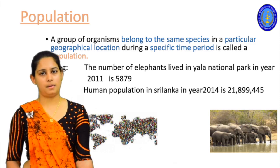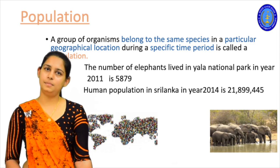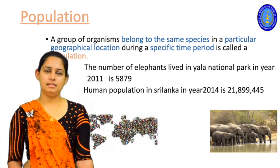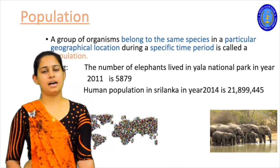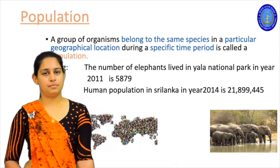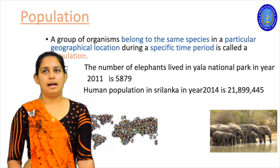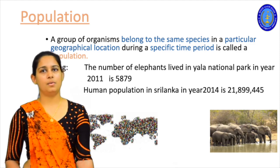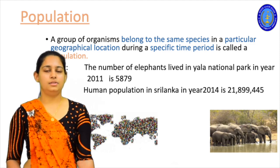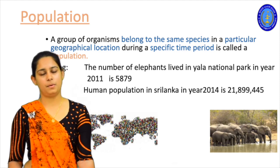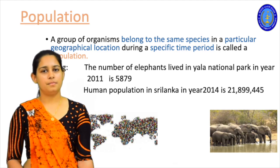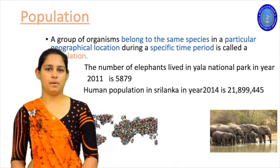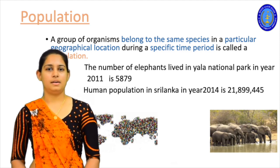For example: the number of elephants living in Yala National Park in the year 2011, or the human population in Sri Lanka in the year 2014. In these examples you can see the species type is given — whether it is elephants, humans, or any other animals — the particular geographical location is also given, such as Yala National Park or Sri Lanka, and the specific time period is also indicated, whether it is 2011, 2014, or a particular month.